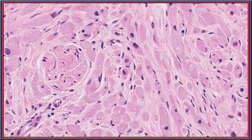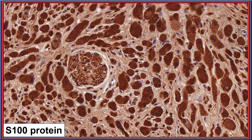Perineural involvement is quite common. There is a notable similarity between the nerves and the tumor cells, as each has granular cytoplasm. The polygonal quality and eosinophilic cytoplasm are characteristic of the lesion, with S100 giving a strong nuclear and cytoplasmic reaction in the neoplastic cells, with the nerve serving as an internal control.